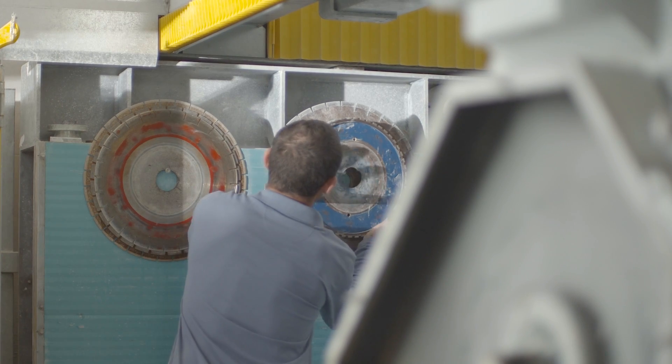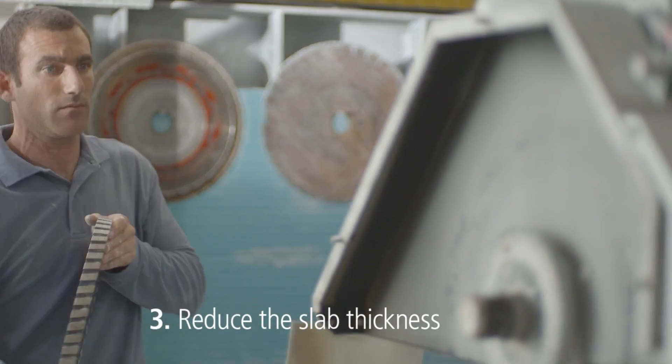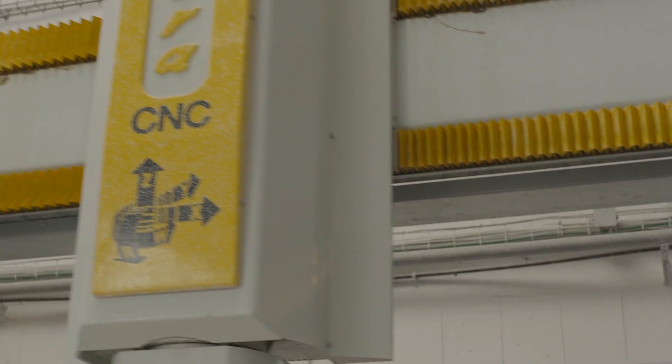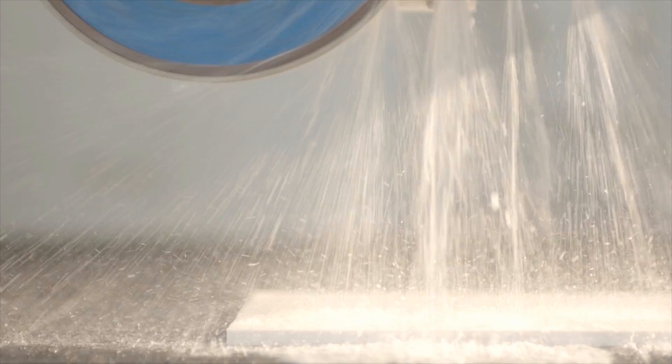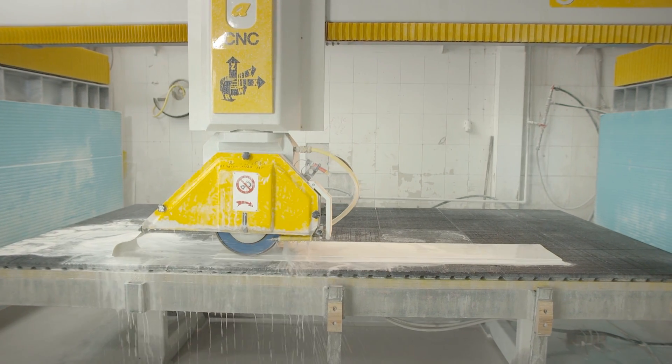Once you have the correct dimensions, reduce the slab thickness. We're using a CNC machine with a grinding wheel because it is suitable for wider pieces. The thickness to which you reduce the Caesarstone depends on the radius you want to achieve.